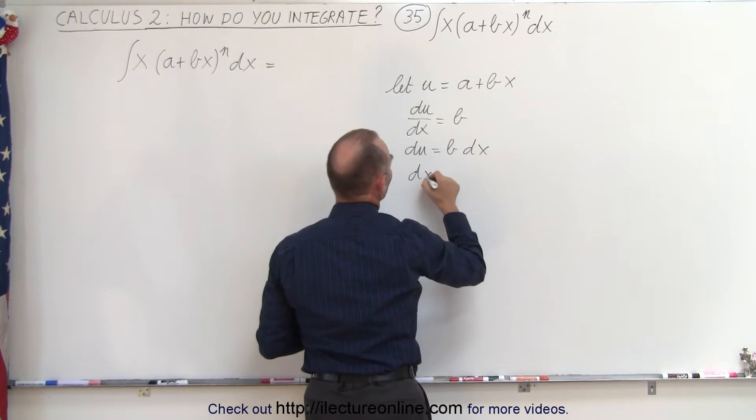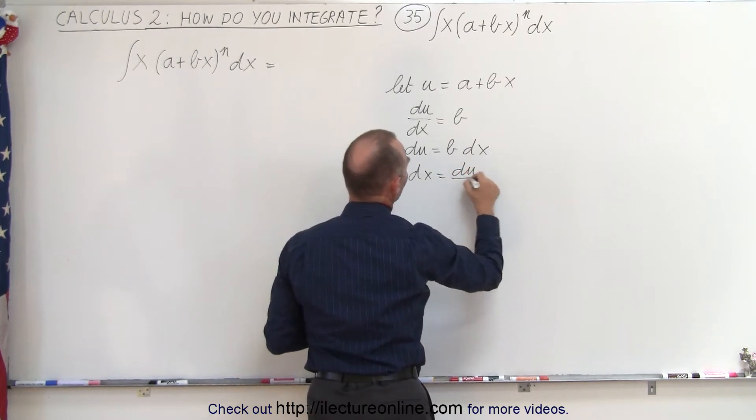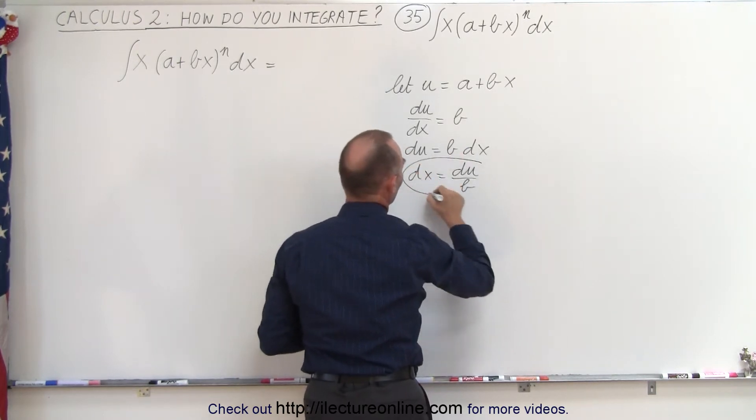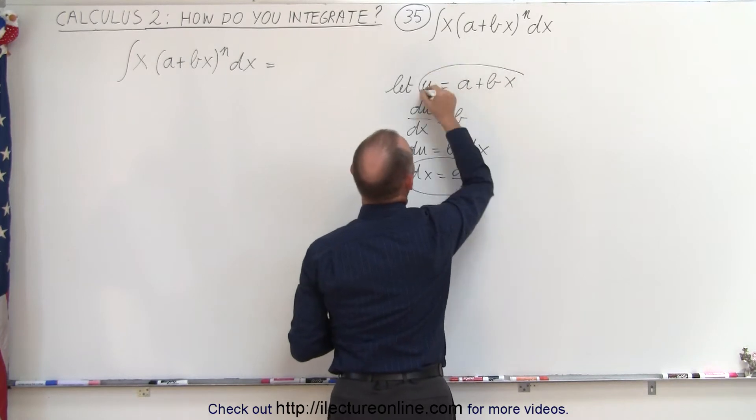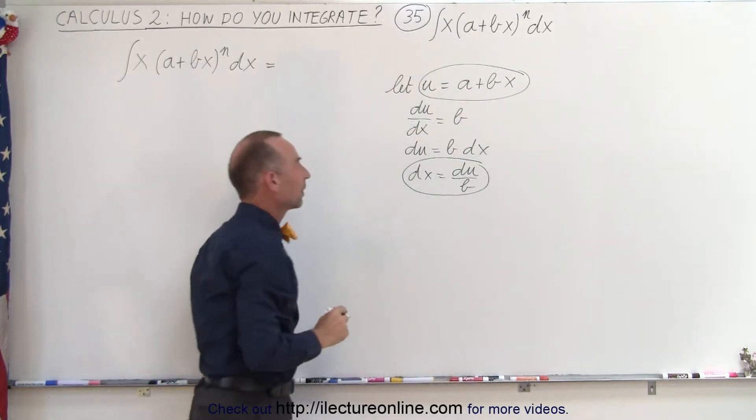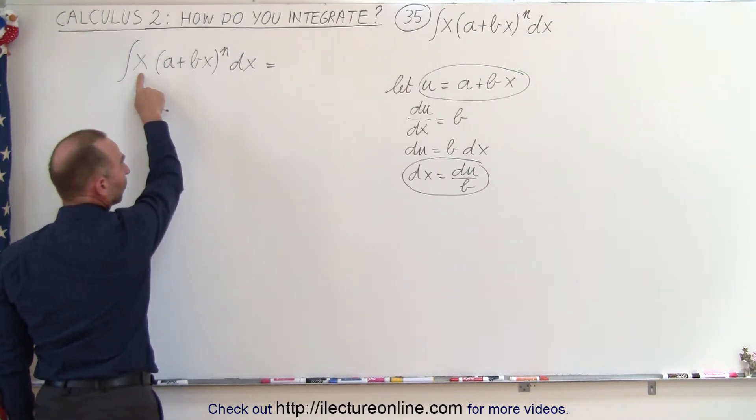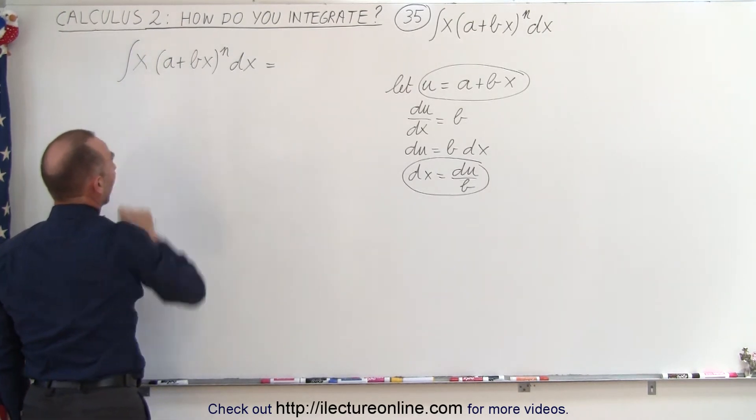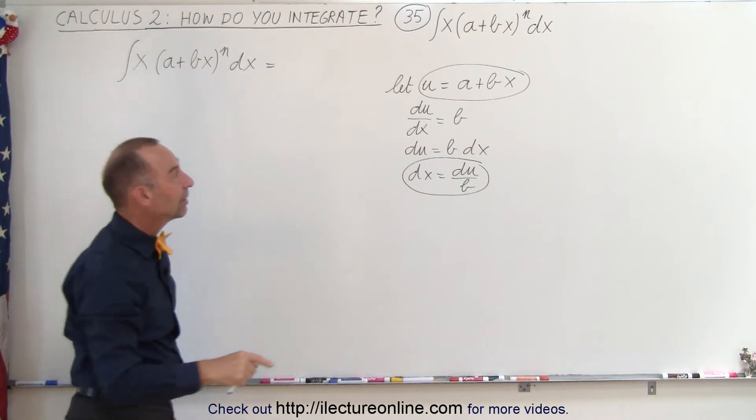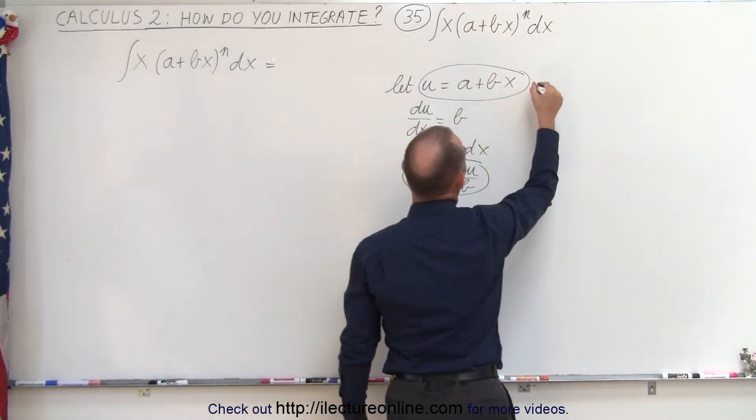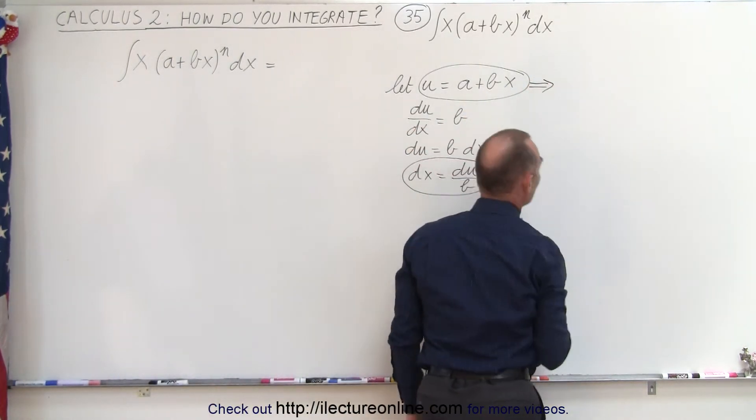We should substitute this inside our integral sign, but when we do that, we have a problem. We have nothing to substitute in for x. So how can we do that? Well, we can take this equation here and solve for x. That's the trick.